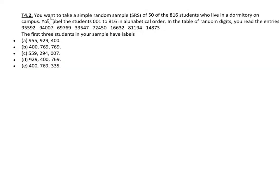Number two, you want to take a simple random sample, or SRS, of 50 of the 816 students who live in a dormitory on campus. You label the students 001 to 816 in alphabetical order. In the table of random digits, you read the entries listed right here.